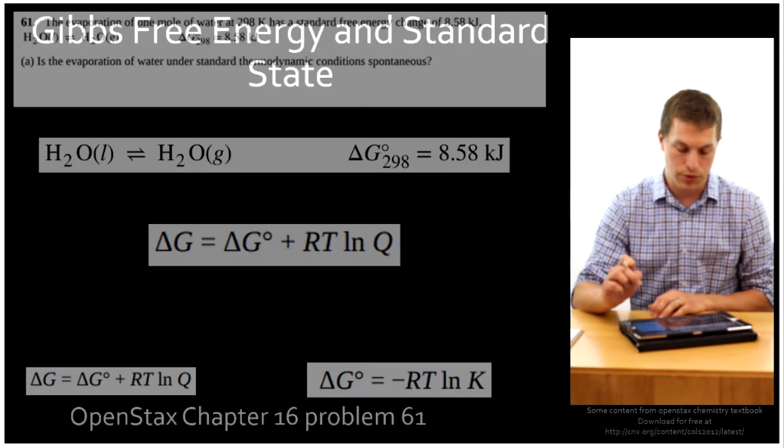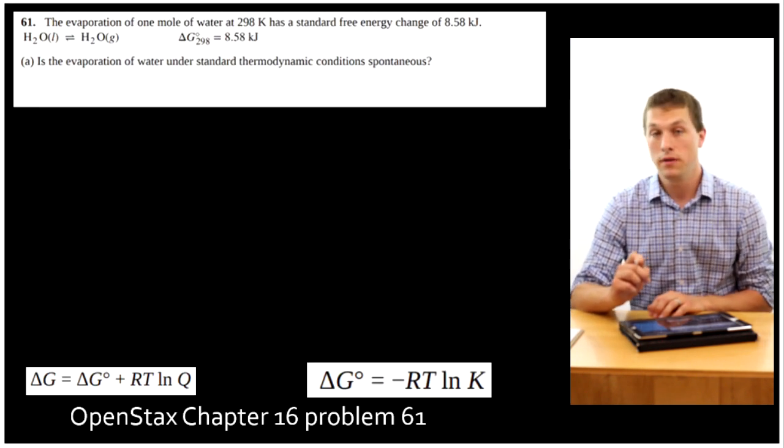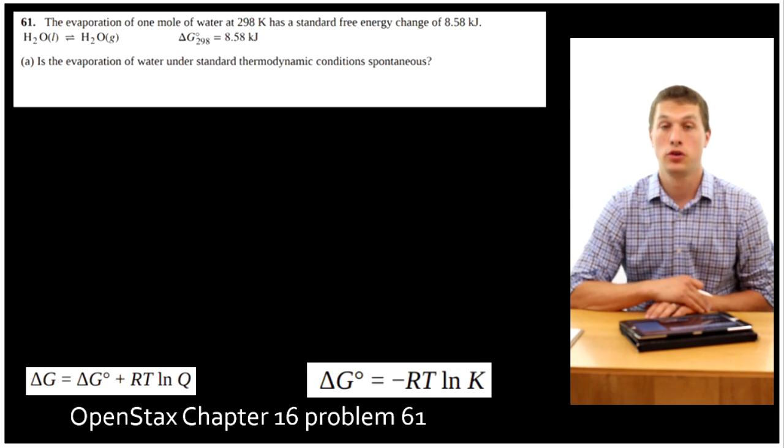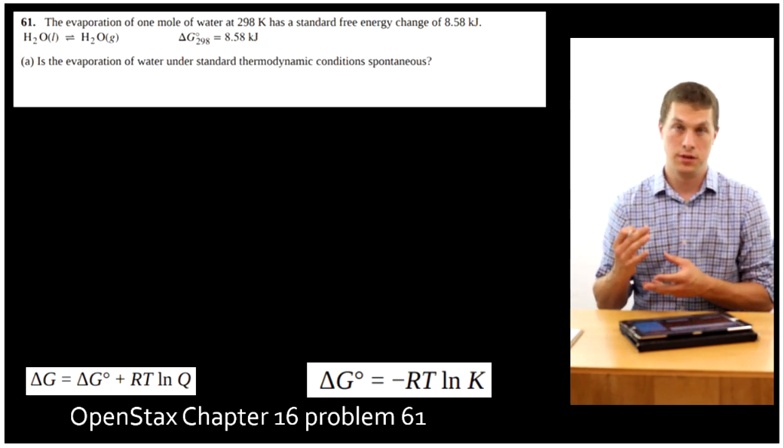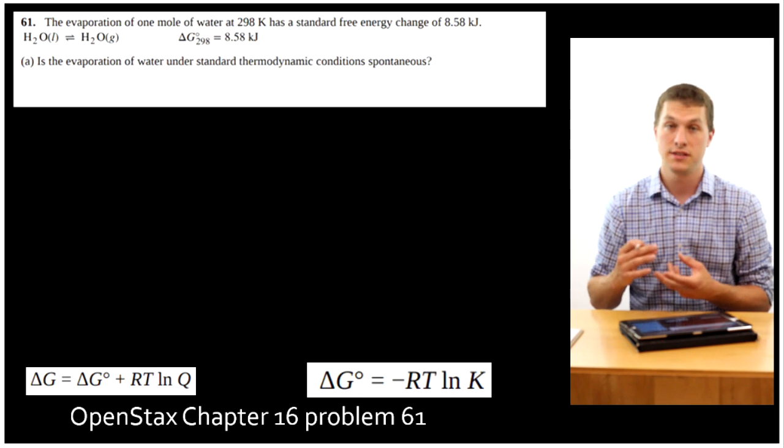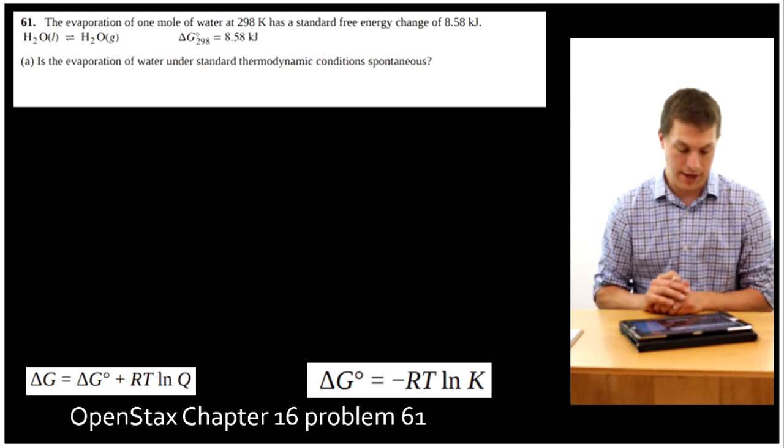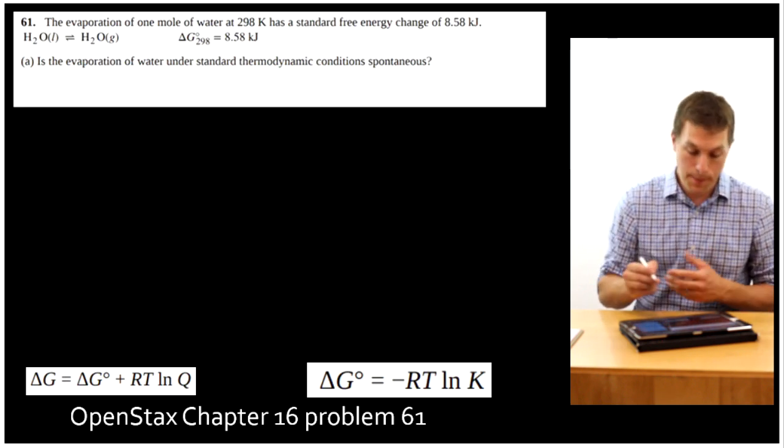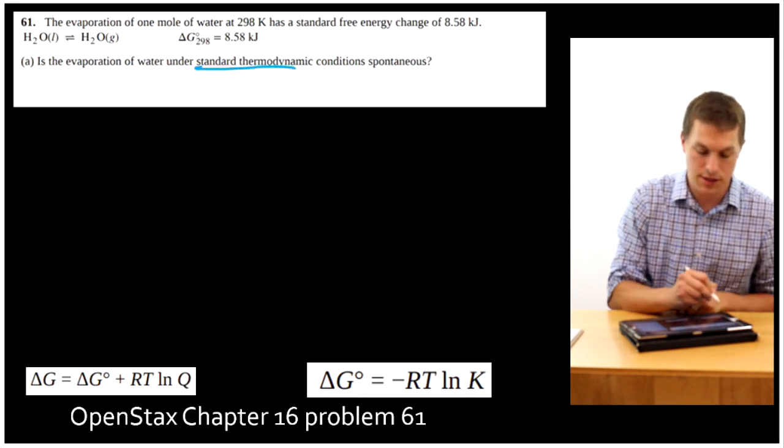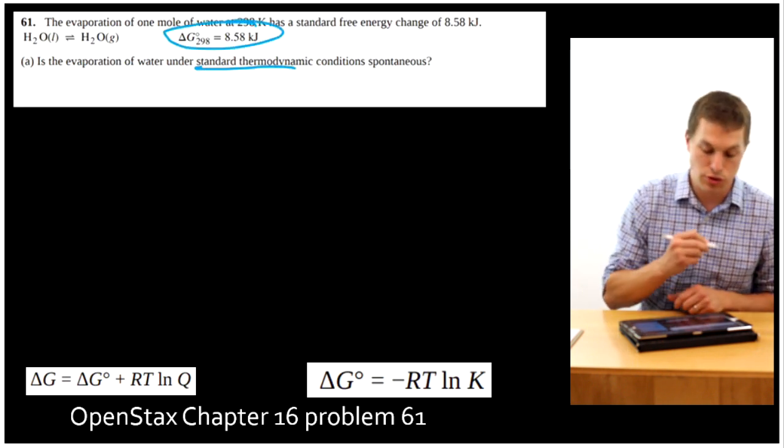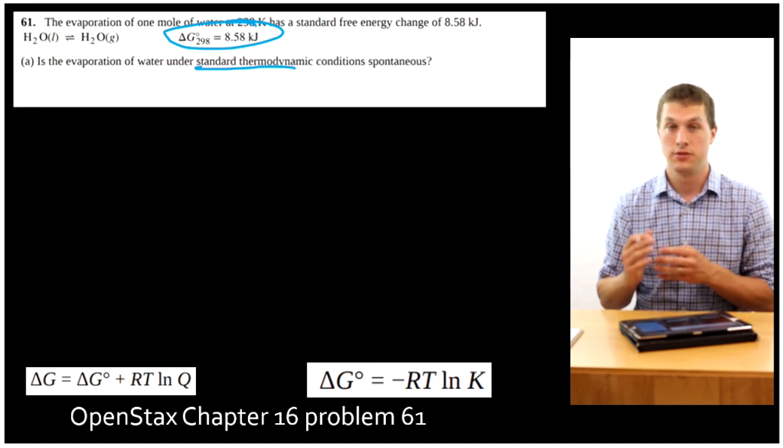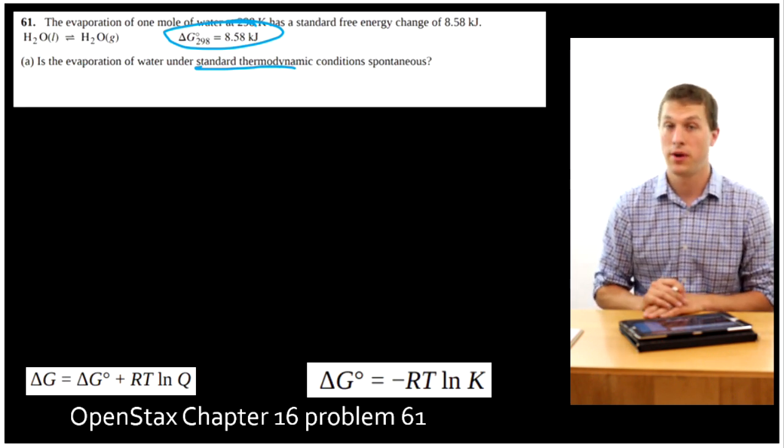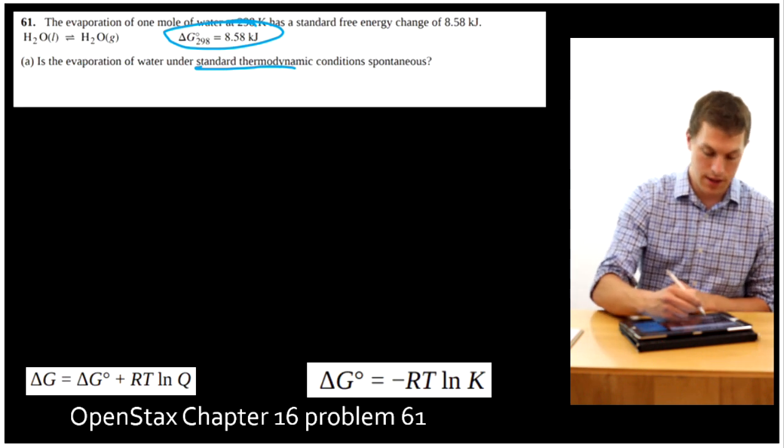So now what we're going to do is we're going to work through problem 61 from chapter 16 of the OpenStax textbook. This is a good problem to get your hand around changing the Gibbs free energy from a standard state to a non-standard state and looking at the equilibrium effects. Okay, so the first part of this question just asks, is the evaporation of water under standard thermodynamic conditions spontaneous? Well, for that problem, it's asking us about standard state. It says standard thermodynamic conditions and we already have that delta G. So no math needed here. All we have to say is, is that delta G positive or negative? That delta G is positive, which tells us our reaction under standard conditions is non-spontaneous.